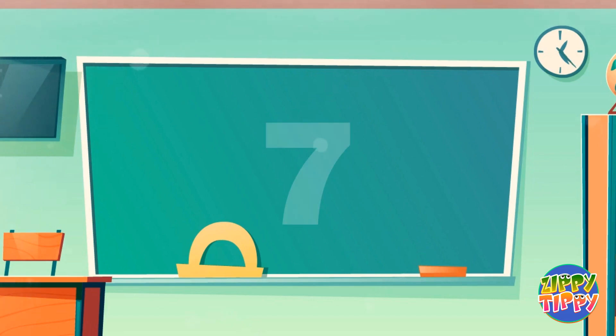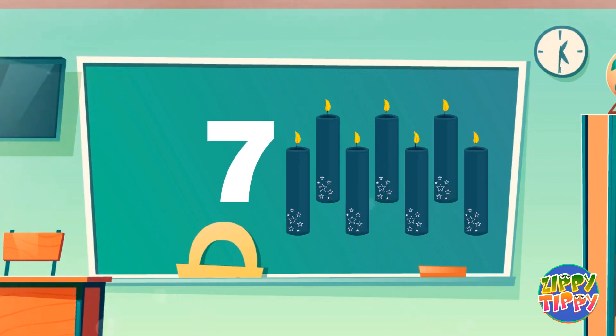Number 7. A sleeping line and a slanting line makes my number 7. Seven candles.